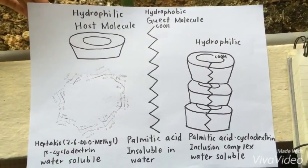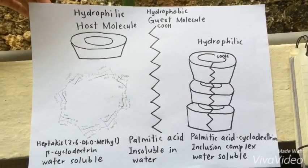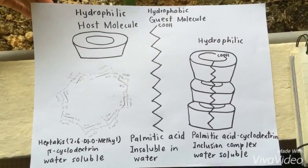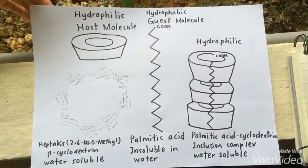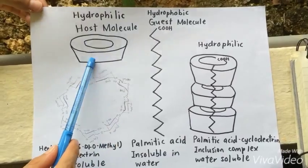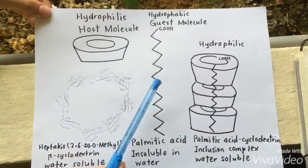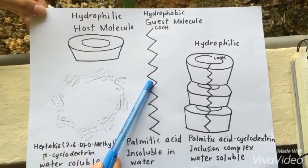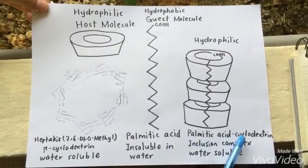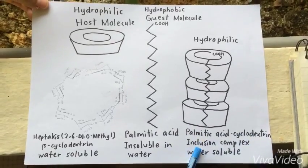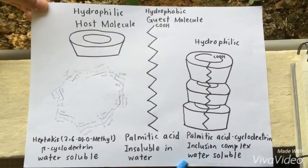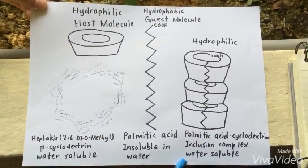In order to make the guest molecule, palmitic acid, become water-soluble, we encapsulate the beta-cyclodextrin into it. This will then form the palmitic acid cyclodextrin inclusion complex, which is soluble in water.